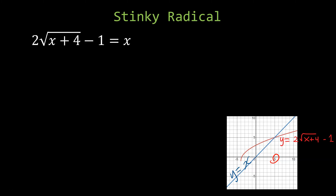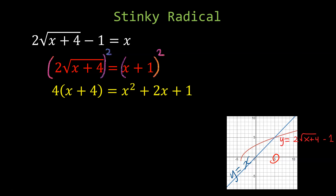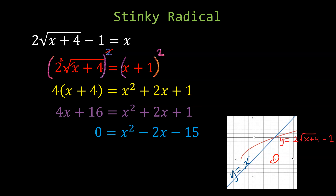So 5 looks like our solution. We add 1 to the right hand side and then square both sides — squaring (x + 1) is much easier than squaring the left side as-is. Separate the square root as much as possible, then square both sides. 2 squared is 4, so we have 4 times (x + 4) on the left. On the right hand side we have a perfect square: a² + 2ab + b². Distributing and combining into standard quadratic form — set equal to zero so we can factor.